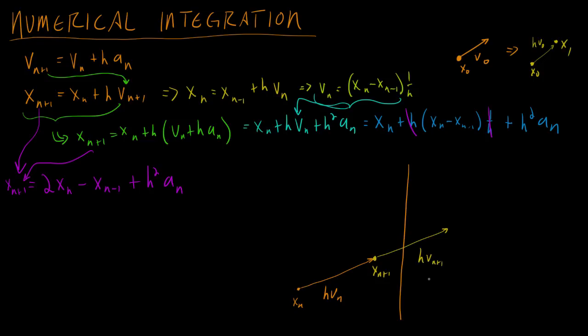So with semi implicit Euler, this is a pretty straightforward case to solve. Depending on whether your collision is elastic or inelastic or whatever, you can do a few things, but then you just set the new position right here and you set the new velocity right there and you're done.